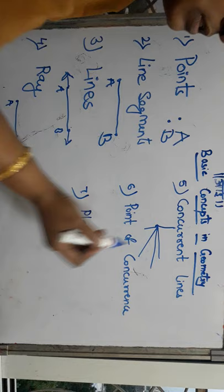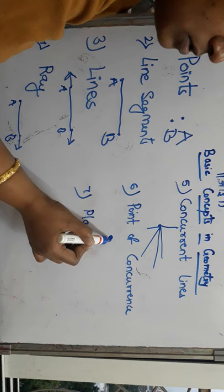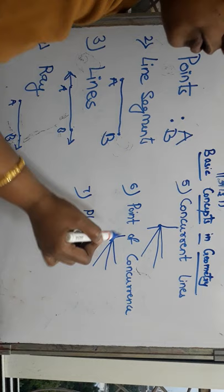Next is point of concurrence. The point where so many lines pass through is a point of concurrence. So this is a point of concurrence.